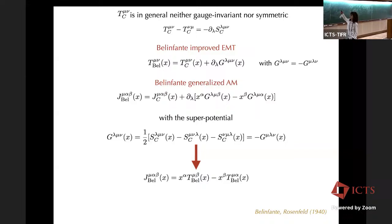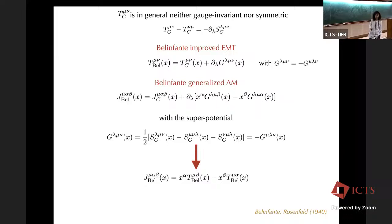I don't have time to go through the derivation — you'll have to take my word for it. The canonical energy-momentum tensor is not symmetric; its anti-symmetric part is associated with the spin. We want to add a contribution called the superpotential to construct a new symmetric energy-momentum tensor. This is done by adding a superpotential which is this combination of the spin components of the energy-momentum tensor, and adding it to the canonical energy-momentum tensor gives something symmetric.